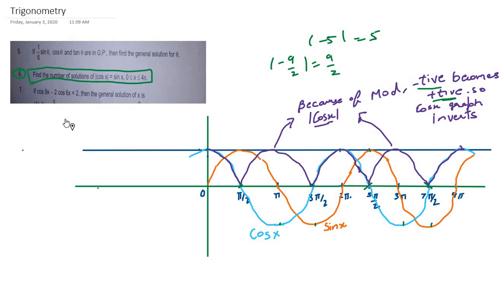Now I have to find the solutions for this equation |cos x| = sin x for 0 ≤ x ≤ 4π. What is the meaning of solution? Solution means wherever my sin x graph meets |cos x|, wherever these two graphs intersect.